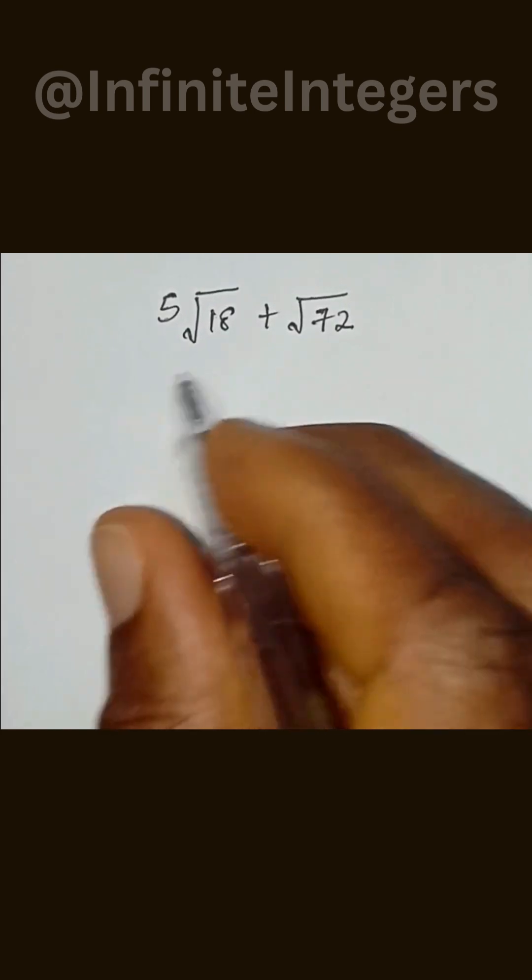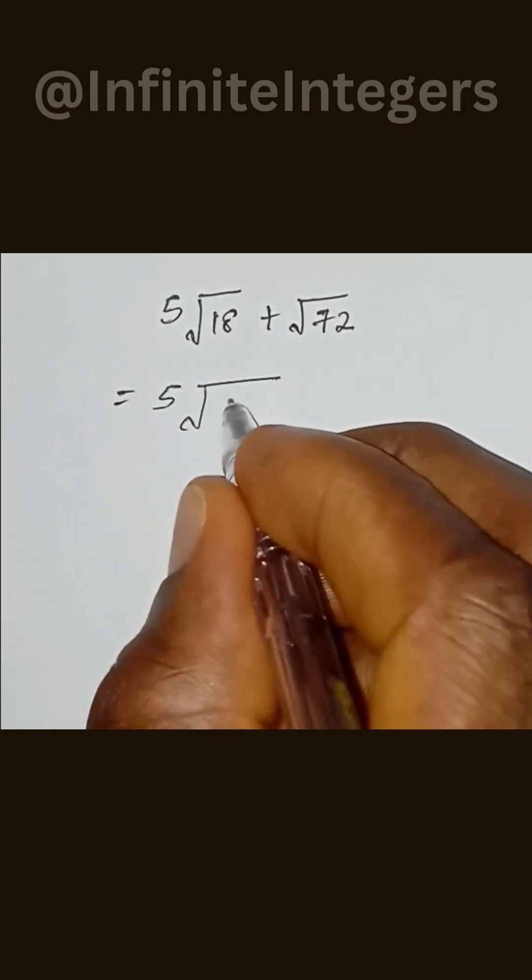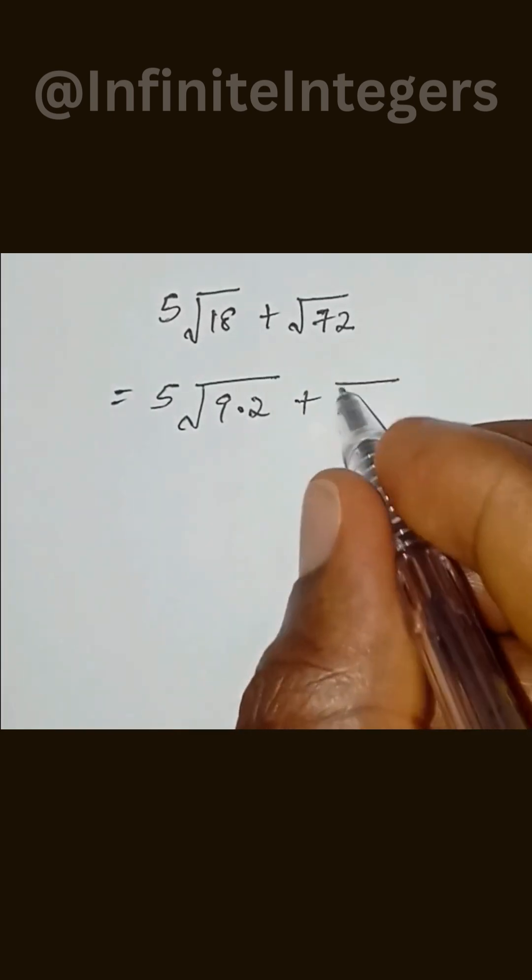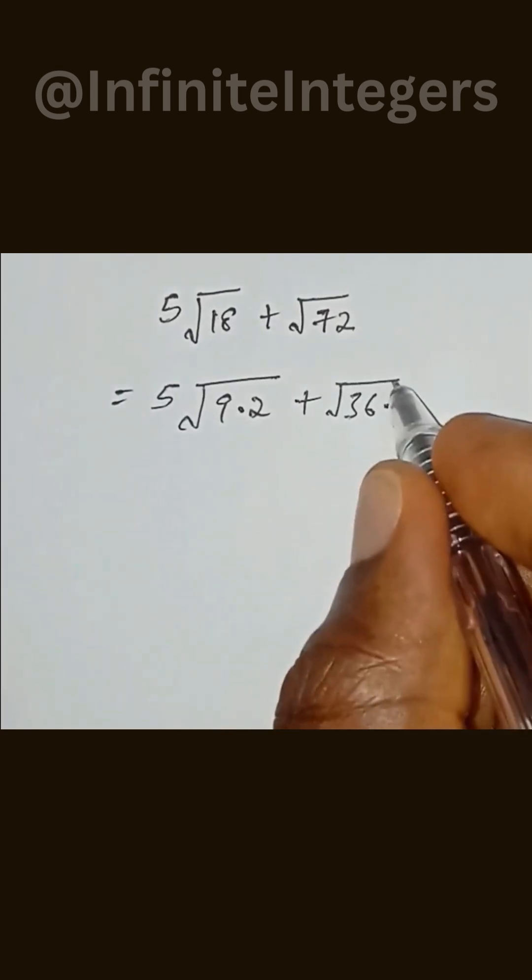How to simplify this expression? This is equal to 5 square root 9 multiplied by 2 plus square root 36 multiplied by 2.